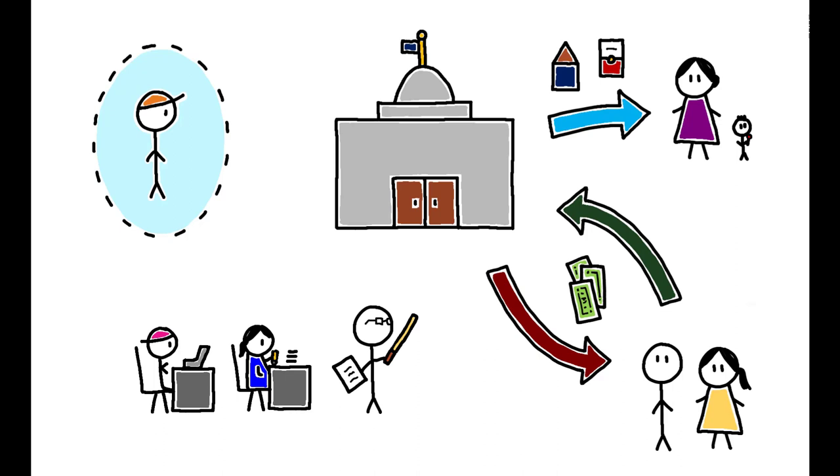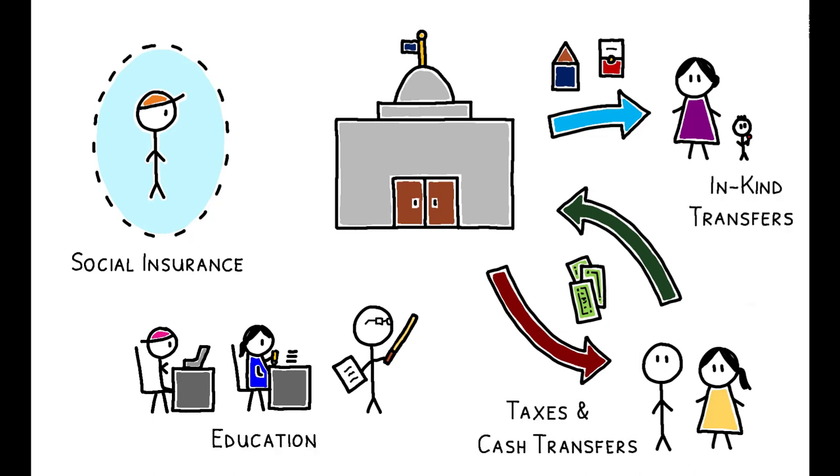The analysis spans 133 policy changes across four domains: social insurance, education, taxes and cash transfers, and in-kind transfers.